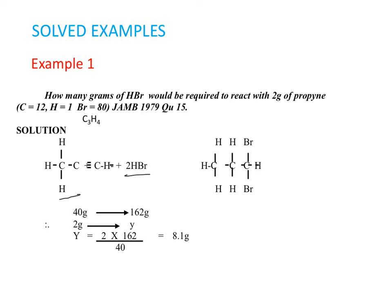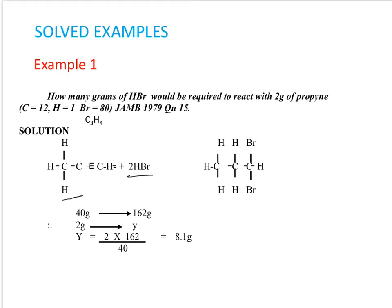From this you can calculate the molecular mass of propyne and that of hydrogen bromide. For propyne, it has 3 carbon atoms, so 3 times 12 equals 36, plus 4 hydrogen atoms, so 4 times 1 equals 4. 36 plus 4 equals 40. So the molecular mass of propyne is 40g.